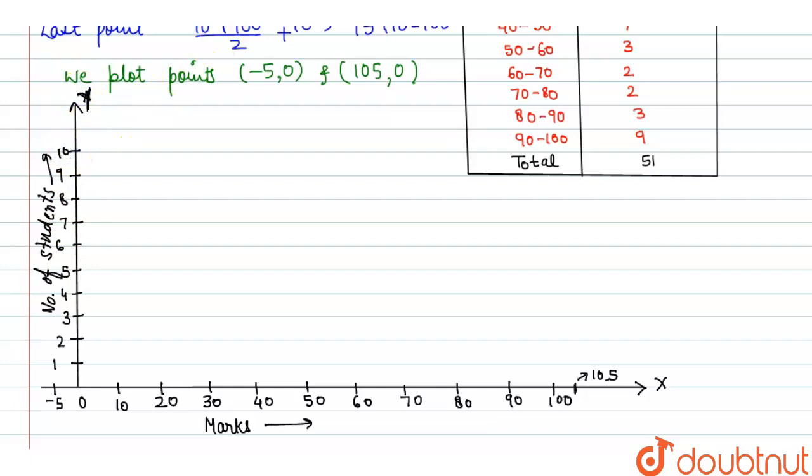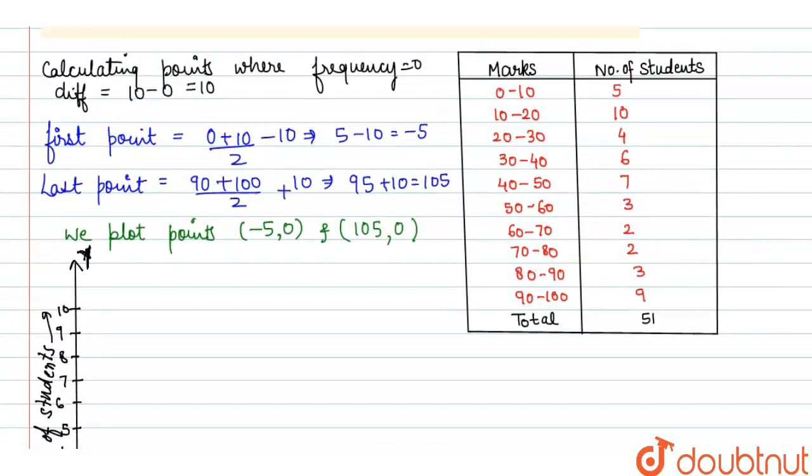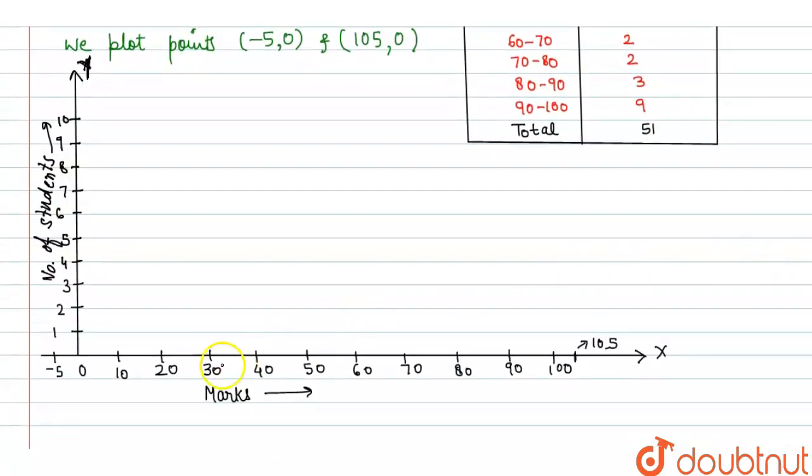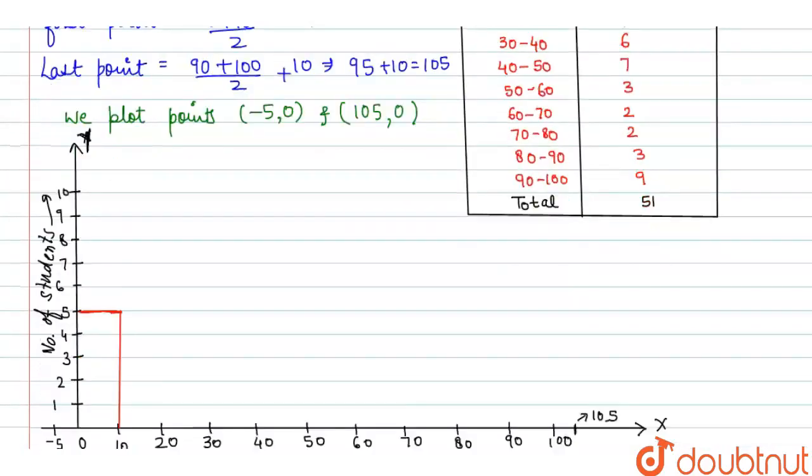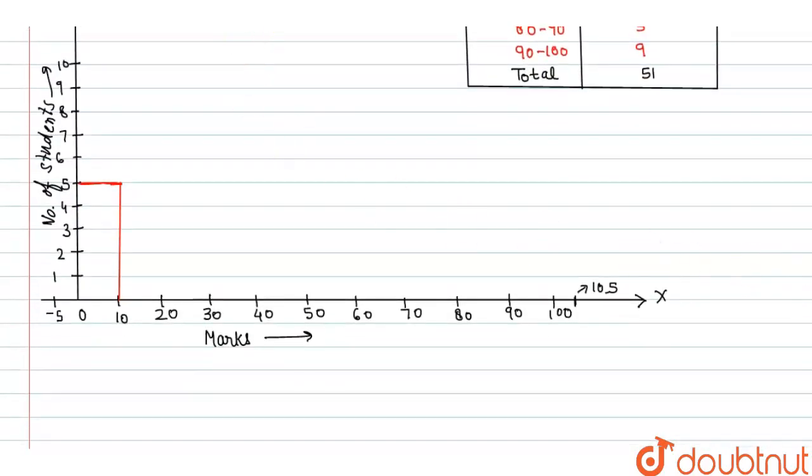Now we will draw the frequency table. So let's start, first data is given 0 to 10, 5. So I can write 0 to 10, 5 means this one. Next is 10 to 20, 10 to 20 on 10, so 10 to 20 on 10 means this one. So the table is like this.